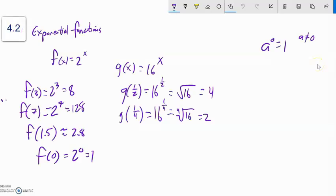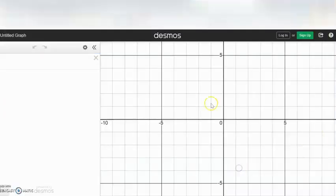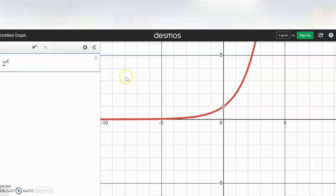This is section 4.2. We're going to take a look at some of these exponential functions and think about the ways in which you can graph them. So I've already graphed 2 to the x. Looks like that.